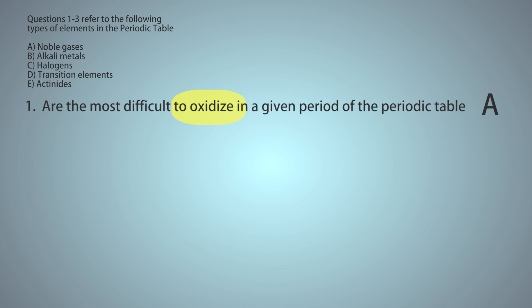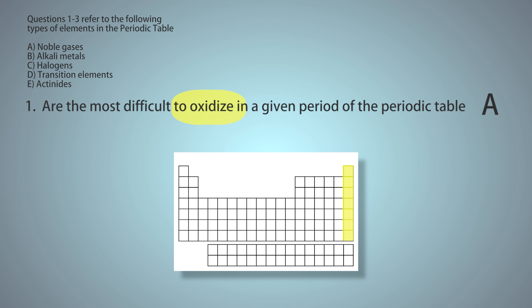The elements that are the most difficult to oxidize, or reduce for that matter, are the noble gases. They're considered inert. Remember the noble gases are found in column 18, group 18, on the far right of the periodic table.